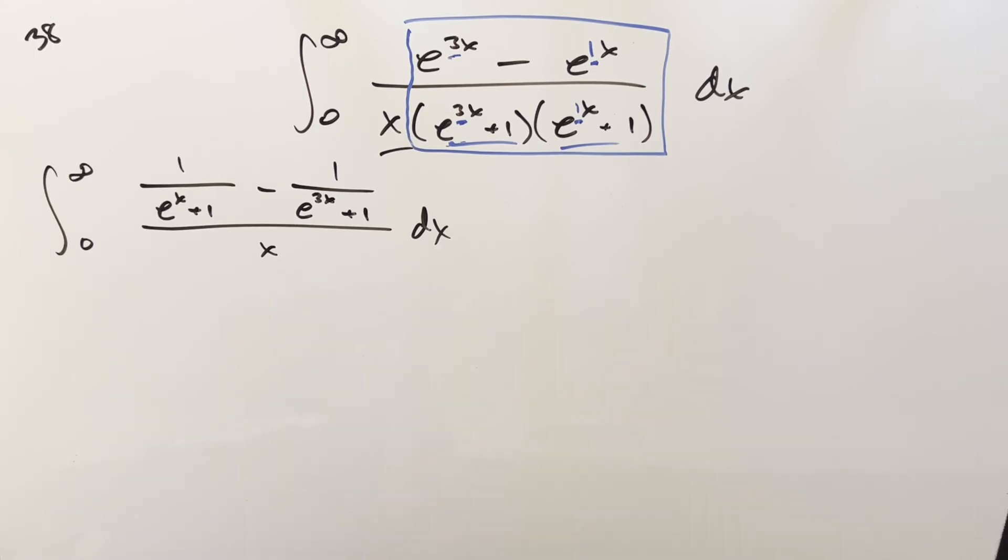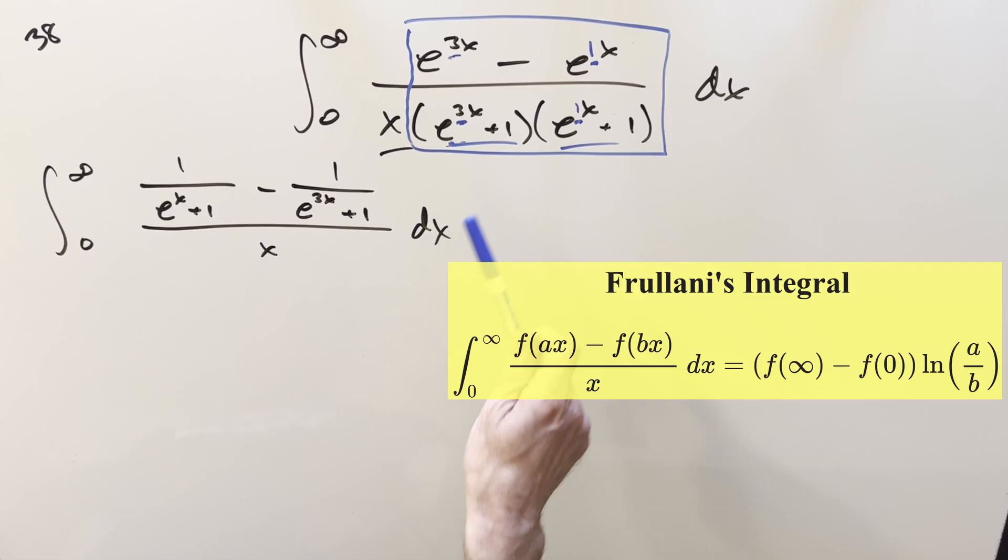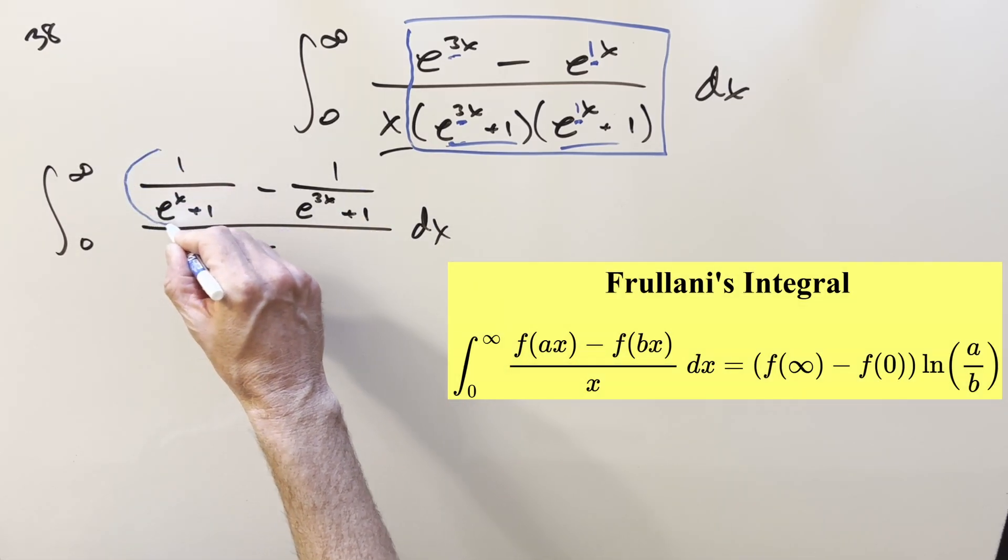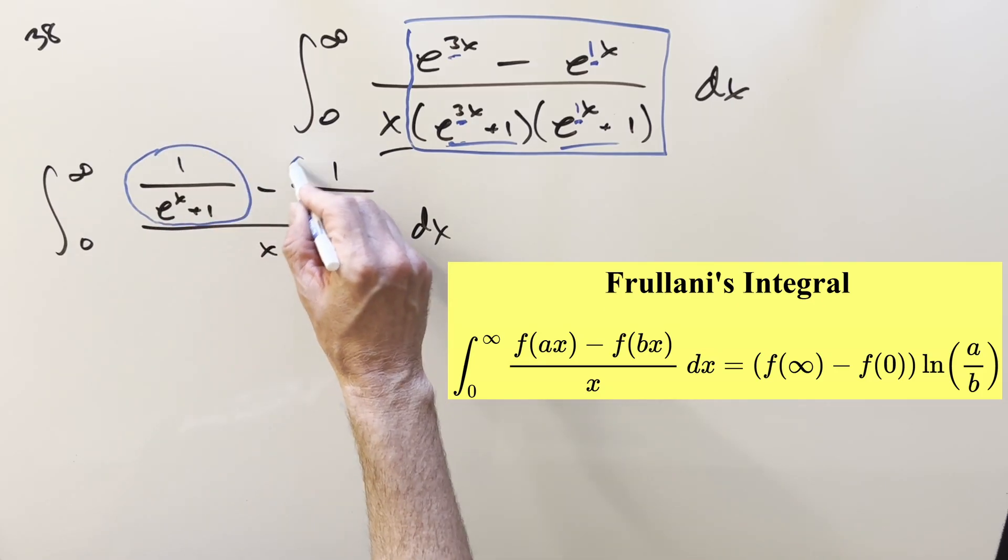But now rewriting it this way, you'll notice it's in exactly the right form for Frulani's integral, just pulling, now that we have everything into the numerator, the function on it, the f of x value, we can look at this right here.